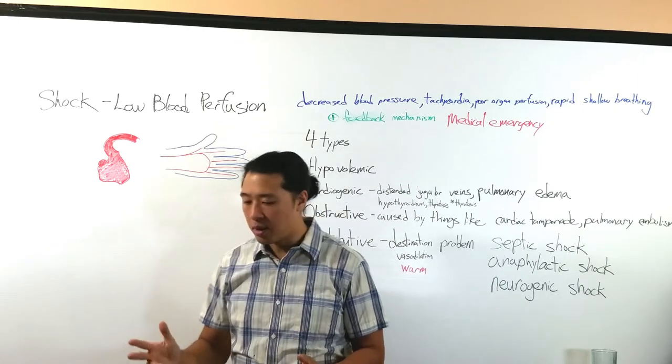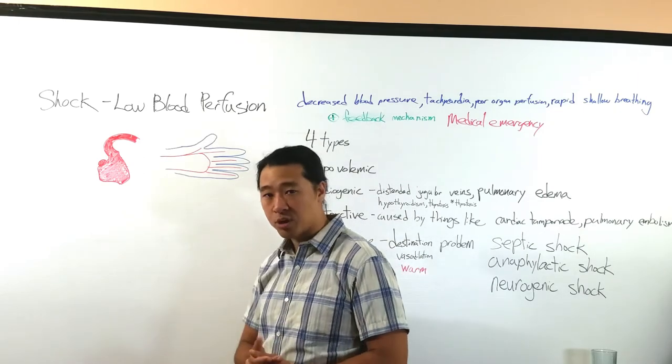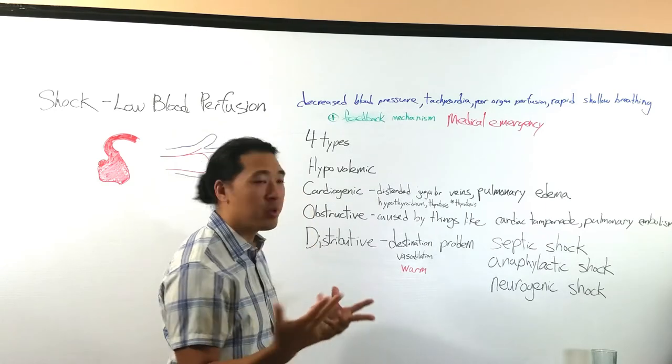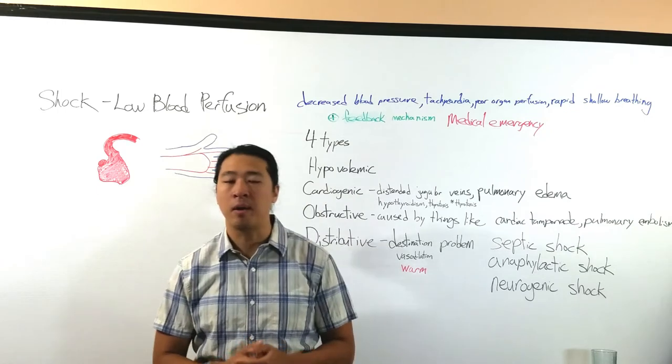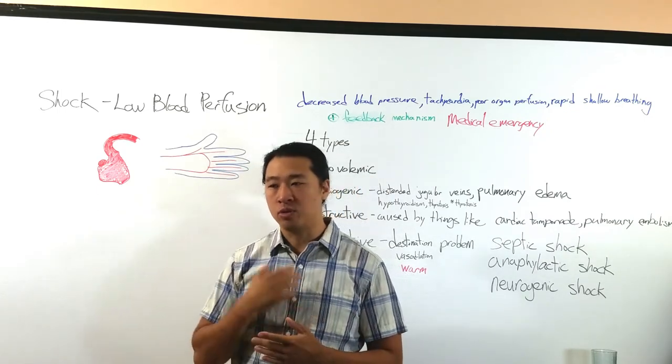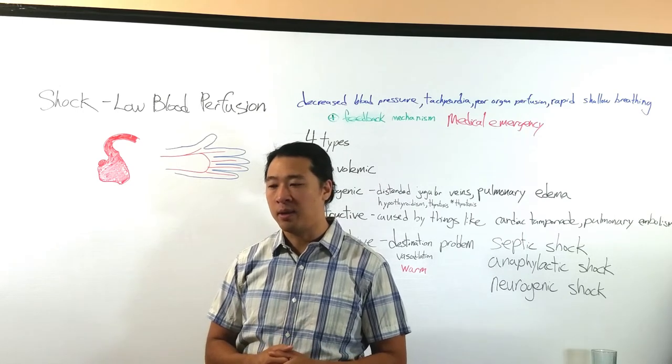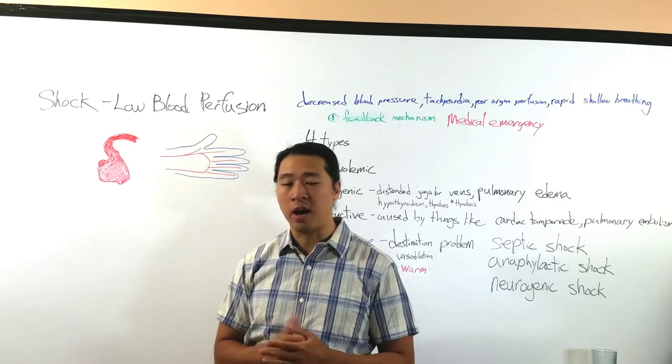Once again, we have some similar symptoms. Cold fingers, we're going to have the low blood pressure, the rapid breathing, and the core organ perfusion. And also both of them will also have tachycardia. The heartbeat will start to raise to try to make up for the fact that the blood does not get into the end organs and the tissues are really clamoring for oxygen.